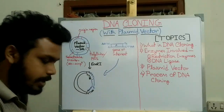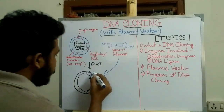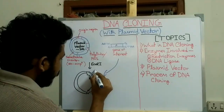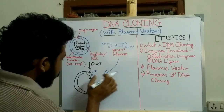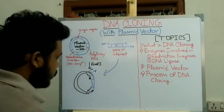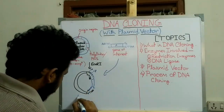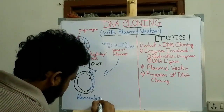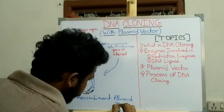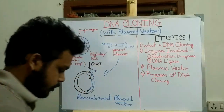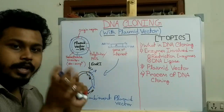Now we add DNA ligase. DNA ligase creates a phosphodiester bond between the 5' phosphate group of one end and the 3' OH group of the other end, joining the fragments together. This produces what is known as a recombinant plasmid vector, which contains the gene of interest. It is called recombinant DNA because it contains two different fragments of DNA that come from different sources.